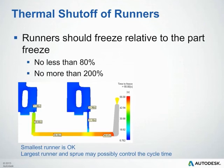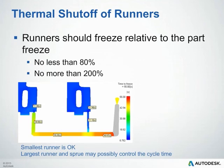Another thing to be aware of is the thermal shutoff of your runners. The runners should be sized so they allow the parts to fill and pack without controlling your actual cycle time. As a general rule of thumb, we don't want your runner to freeze off any less than 80% of the actual freeze time of your part, ensuring the gate does not freeze off prior to finishing packing. On the other hand, we do not want it to be more than 200% of the time it takes your part to freeze, because then your feed system is controlling your cycle and wasting time.